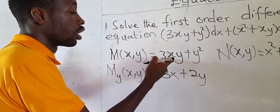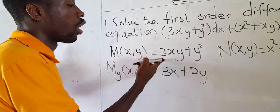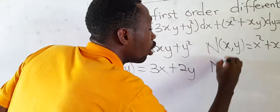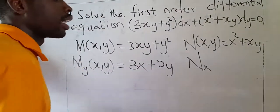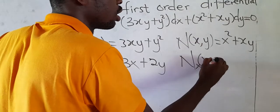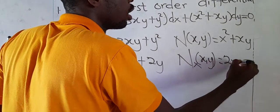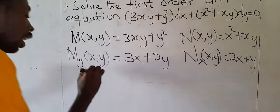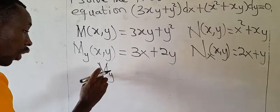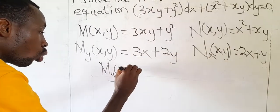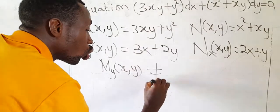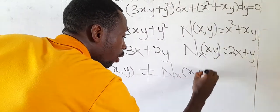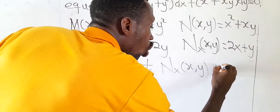Then we find the partial differentiation of N with respect to X, keeping Y constant. We get 2x + y. You can see that the partial differentiation of M with respect to Y (which is 3x + 2y) is not equal to the partial differentiation of N with respect to X (which is 2x + y). So this equation is non-exact.